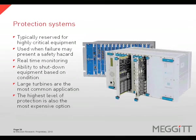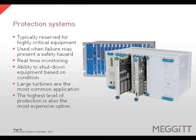Protection systems are used when machine protection is required — typically for highly critical equipment or equipment that, if allowed to fail, would present a safety hazard. Protection systems typically provide real-time monitoring and have the ability to shut down the equipment based on its condition. Large turbines are the most common application for this type of monitoring. While this type of system provides the highest level of protection, it can also be the most expensive.